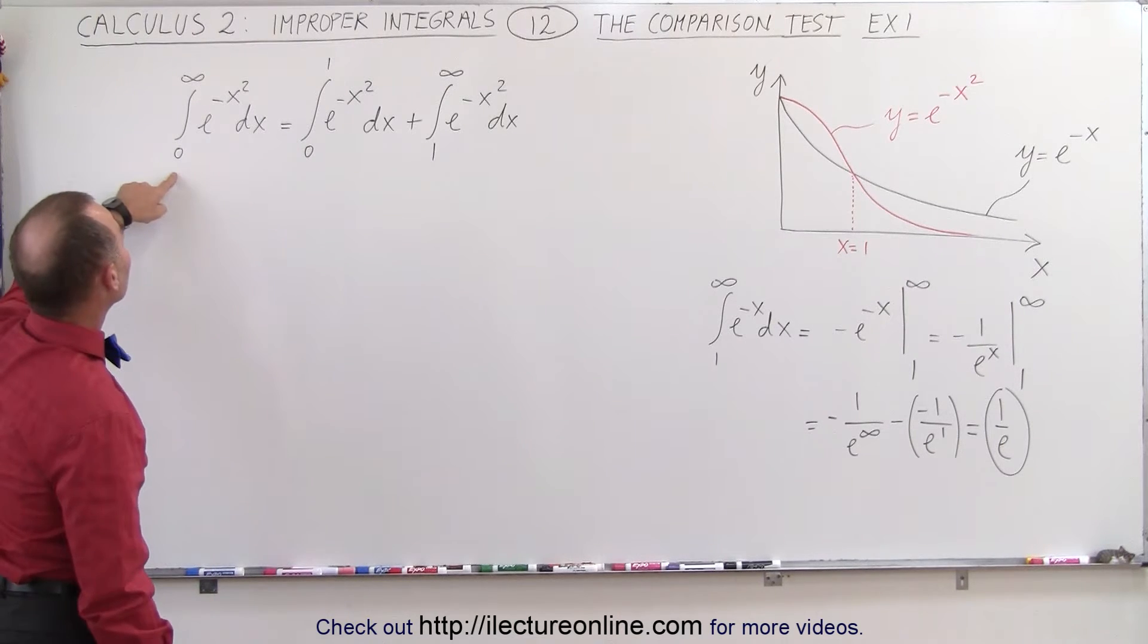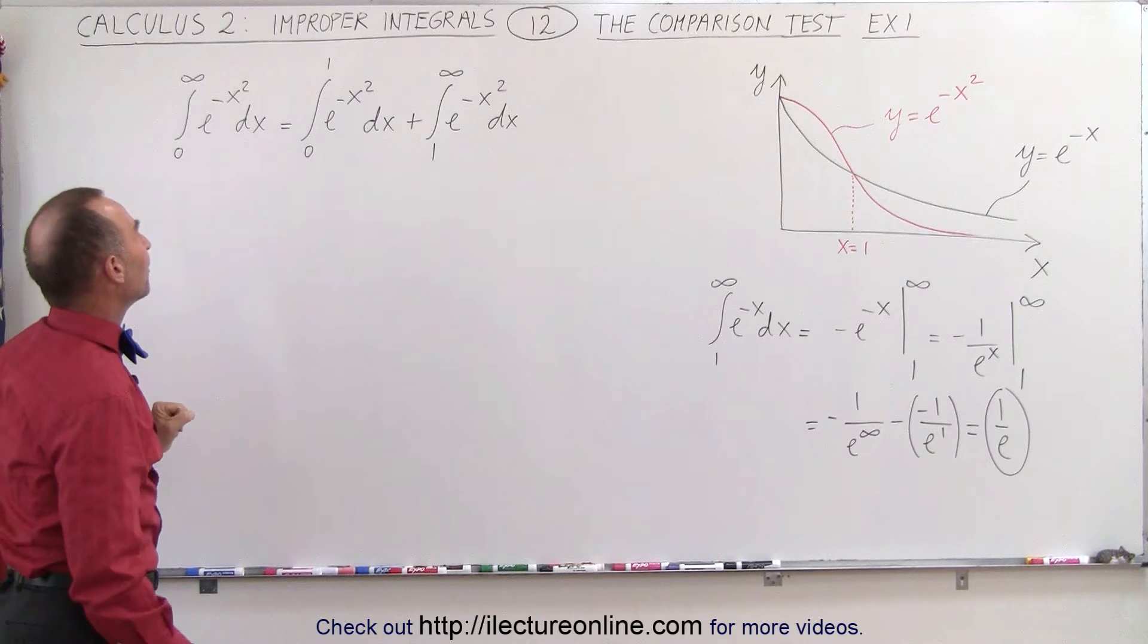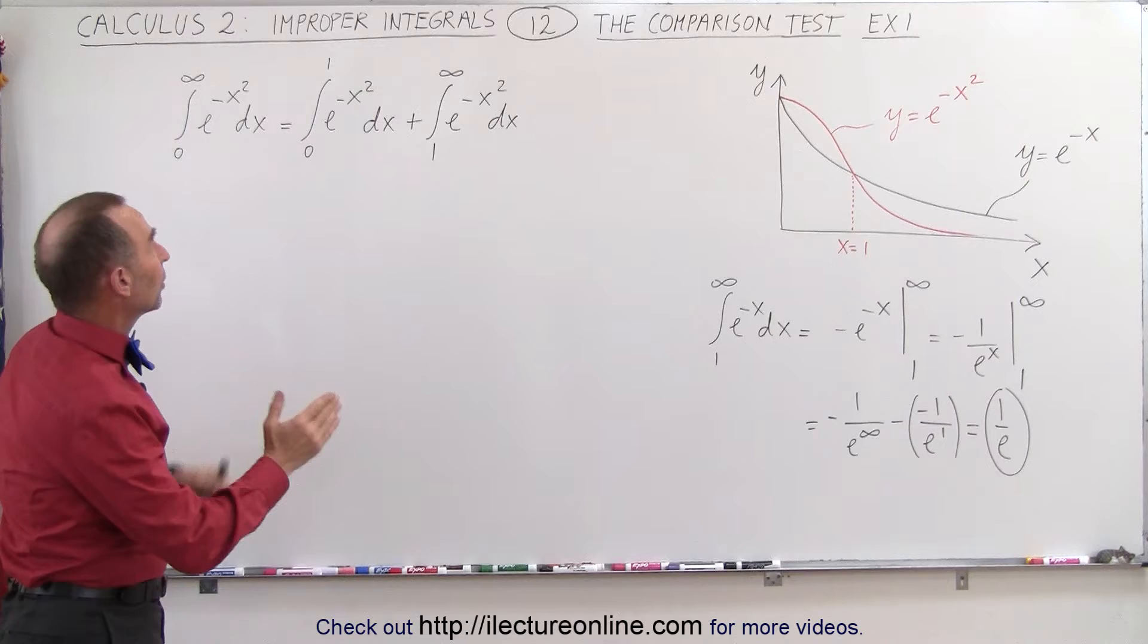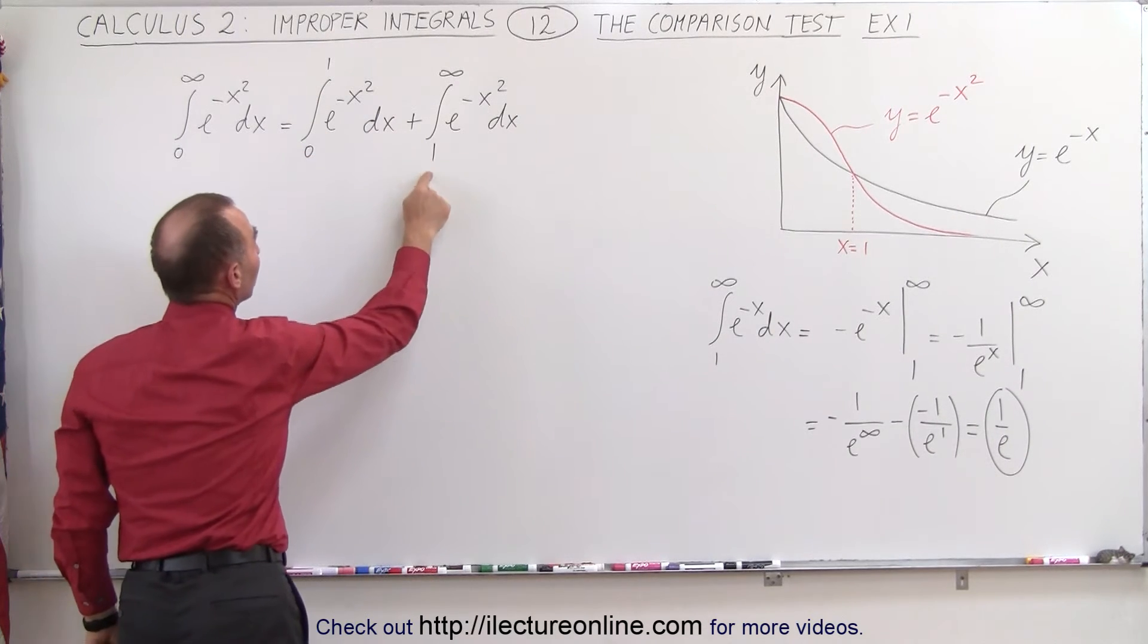We're supposed to integrate the function e to the minus x squared dx from 0 to infinity. What we're going to do is split this up into two integrals. We're first going to integrate from 0 to 1 and then again from 1 to infinity.